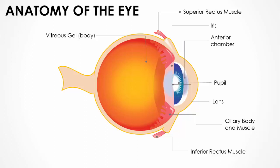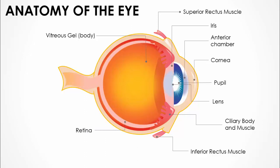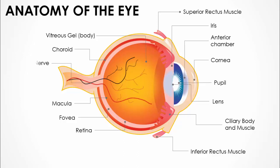At the front is the anterior chamber, and at the very front is the cornea. On the back side of the eye you have the retina, then the fovea, the macula, and the choroid. The last one is the optic nerve. These are the major parts.